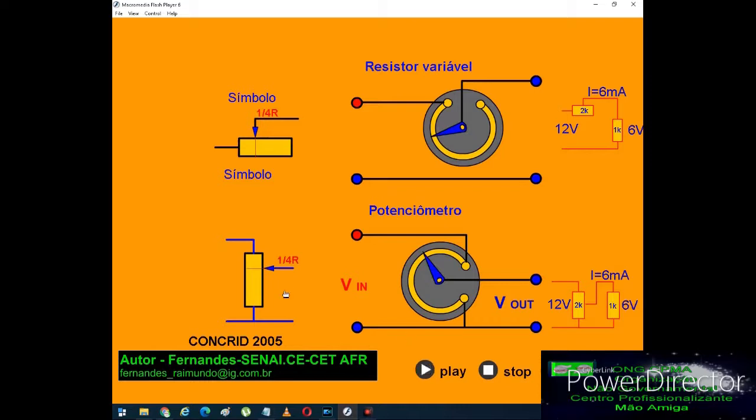You can observe that when I pressed the first condition, it was in the middle, right? Then it went to half of the half. What is half of the half? It's one quarter. Let's continue. It zeroed.